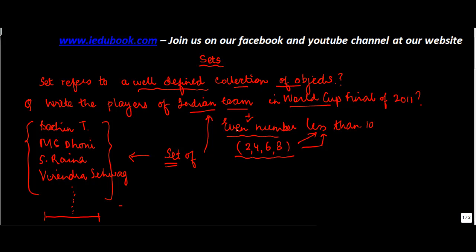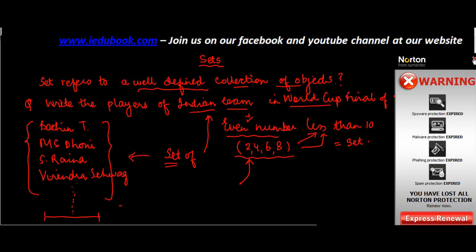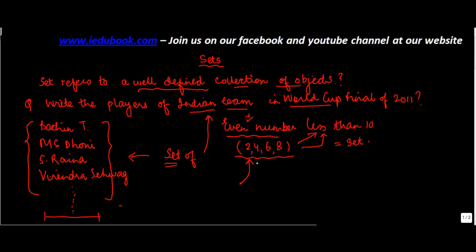defined. So this kind of collection of objects is basically known as a set. Now, each of the items which is contained in this set is known as an object, or an element, or a member of a set. So each of these items is basically an object or an element of a set.